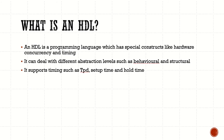Firstly, what is an HDL — a Hardware Description Language? It is just like other programming languages but it has special constructs like hardware-kind concurrency and timing. What is concurrency? It is nothing but that statements are executed concurrently rather than sequentially. This construct is not available in programming languages like C and C++, so this is a benefit of hardware description languages.